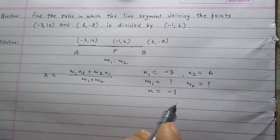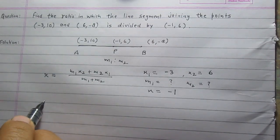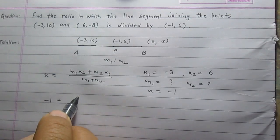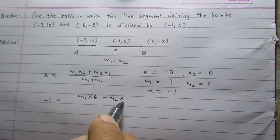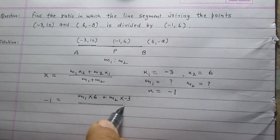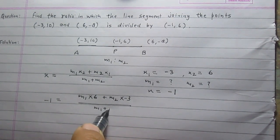After substituting these values in this relation, we will get -1 = (6m₁ - 3m₂)/(m₁ + m₂). We can simplify it.